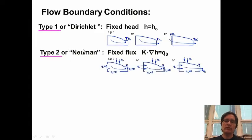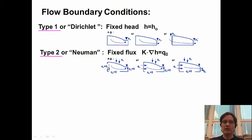Type 2 or Neumann conditions involve zero flux or an imposed flux. Three contexts: we can impose a zero flux along a symmetry divide, an impermeable boundary, or a vertical boundary — for instance a symmetry boundary up to a river, assuming another basin just to the right where flow is also coming up to the river. The same boundary condition can be applied to the water table, where we have a known recharge flux across it.